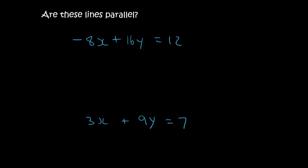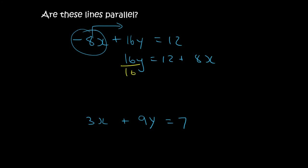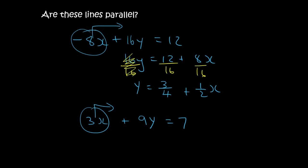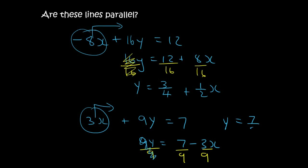This will be the last one we're going to do. We need to get them into standard form. Moving the minus 8 over gives us 16y equals 12 plus 8x, then divide everything by 16: y equals 12/16 which is 3/4, plus 8/16 which is 1/2. For the bottom equation we move the 3x over to get 9y equals 7 minus 3x, then divide by 9: y equals 7/9 minus 1/3. At the top the gradient is 1/2, and at the bottom it is negative 1/3. These two lines are not parallel.